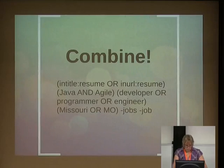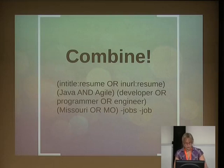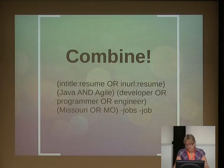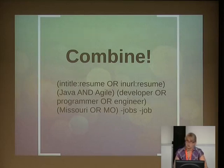And of course, you can combine all of these operators. One example is a recruiter looking for programmers in Missouri who has a Google Alert set up. He's narrowed it down to find people with two particular coding skills, capturing whether they describe themselves as a developer, programmer, or engineer, within the region — and he gets alerted every time someone's resume appears online. It's getting complex with queries, but the payoff is worth it.